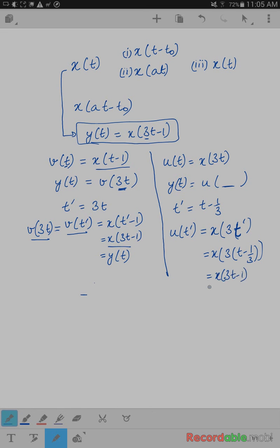And so u of t prime, which is u of t minus 1 over 3, is equal to y of t, right? So you can do it either way. You can first scale as we did here, and then time shift it, or you can first time shift it, as we did here, and then scale it. Either will give you the same answer, and really both of them turn out to be equally convenient to do.